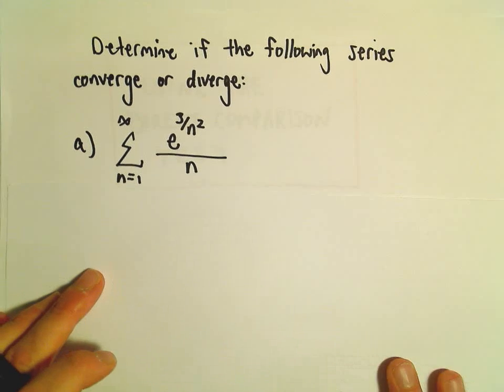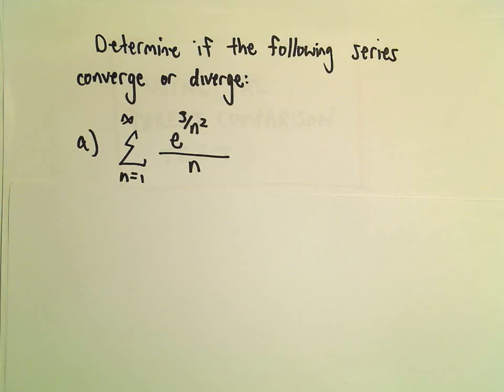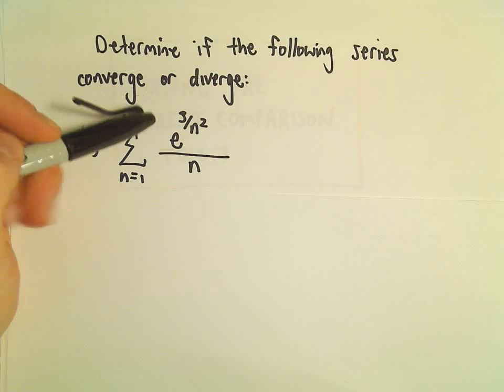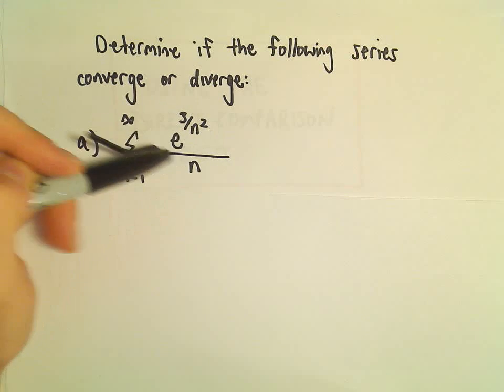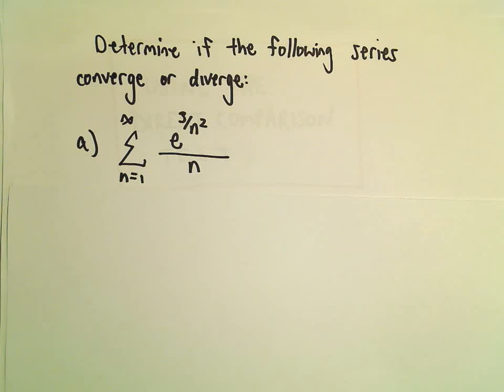The first thing that would be easy to be thrown off by would be the e to the exponent - what's going on with that stuff, especially as n gets bigger. We can do a couple things here.